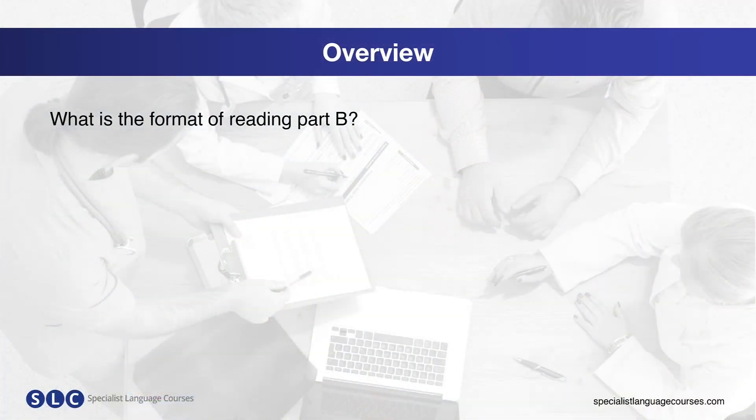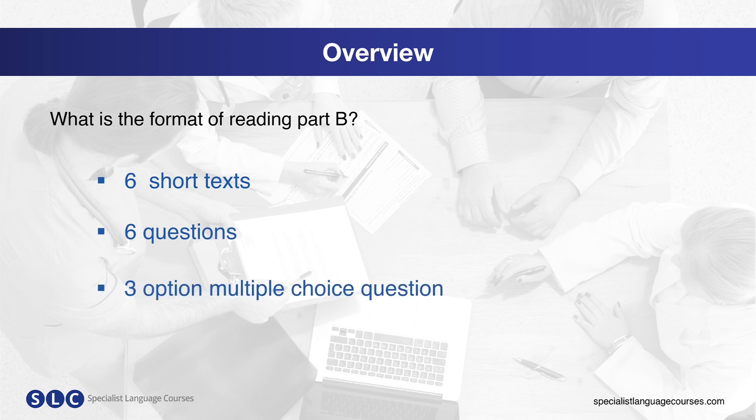So what's the exam format for part B? In part B, there will be six short texts, and each will be approximately 100 to 150 words in length. There are six questions, one for each text, and all of the questions are three-option multiple choice questions.